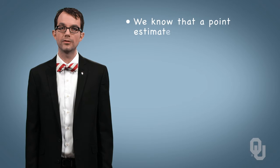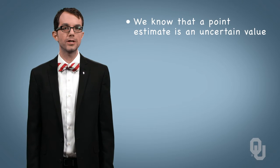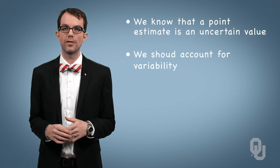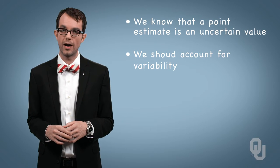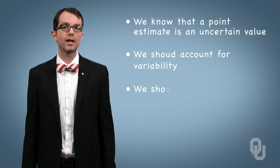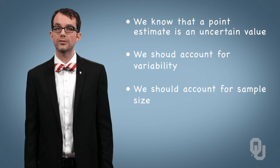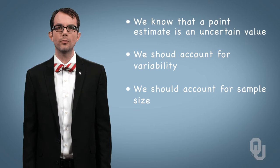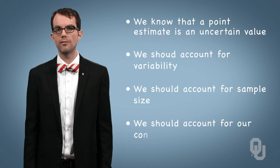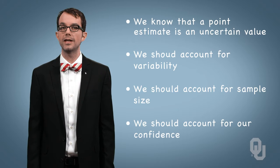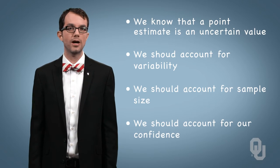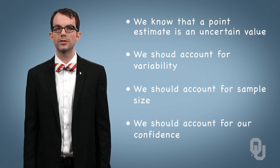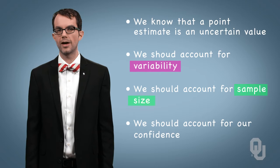We know that a point estimate is an uncertain value. We know that we should account for variability, as a more highly variable sample might tell us that the distribution of that sample mean might also be more highly variable. We know that we should account for sample size, as a larger sample size gives us more faith in making statements about the population. And we know that we should account for some measure of confidence in concluding if the mean is indeed greater than seventeen months. Much like a confidence interval, if we're drawing a conclusion about a population parameter, we should account for variability, sample size, and confidence.